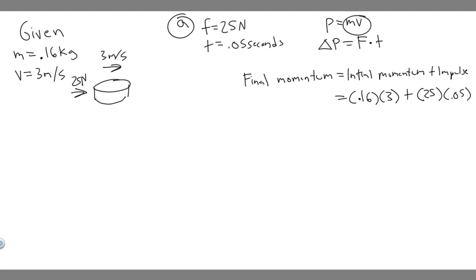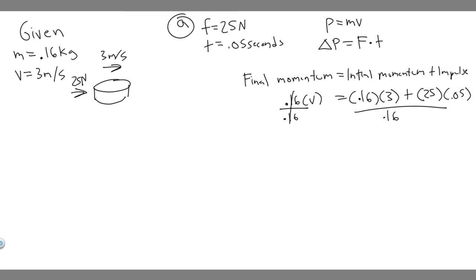Now let's solve for the final velocity. We divide both sides by 0.16. So we compute: (0.16 × 3 + 25 × 0.05) ÷ 0.16. This gives v equals 10.8125 meters per second. That's the answer to Part A — the velocity is approximately 10.81 meters per second to the right, since the force and initial motion are both in the positive (rightward) direction.